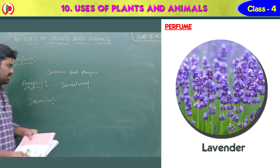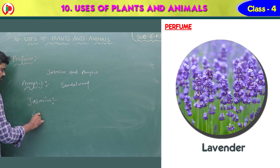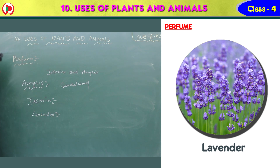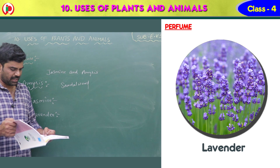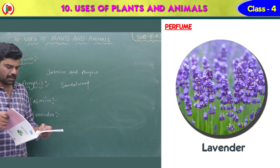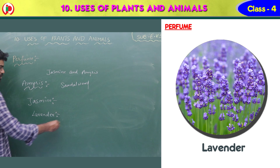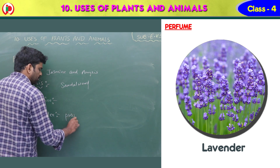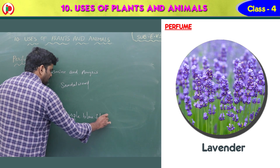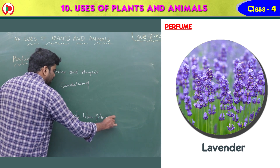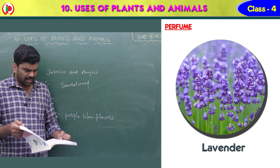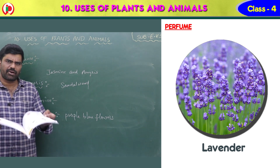Next one is lavender. The lavender plant is named after its purple-blue flowers. So what is the color here? Purple-blue flowers. So all these — amyris, jasmine, and lavender — are perfume names. These are all products of plants only.